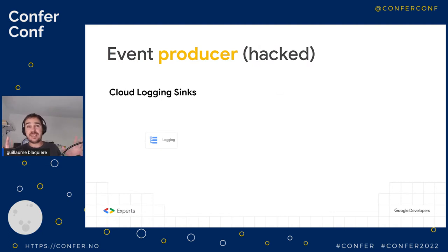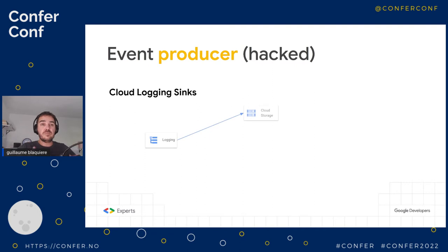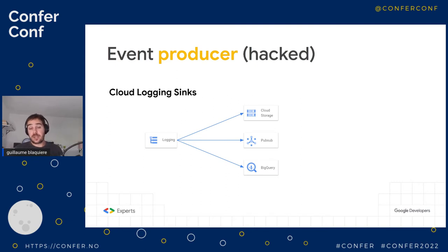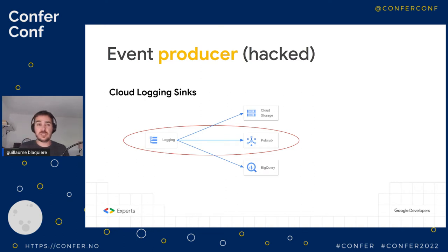There is a hack to produce events from more products, and that's Cloud Logging. Your applications generate logs — business logs, application logs, and audit logs. On these logs, you can create a sink, which is a filter. You filter the log entries you want, and those entries are synced somewhere — Cloud Storage, PubSub, or BigQuery. What's interesting in our case is the PubSub solution, because whatever the product, whatever events generate special logs, you can filter those logs and publish a message in PubSub, then perform subsequent actions.